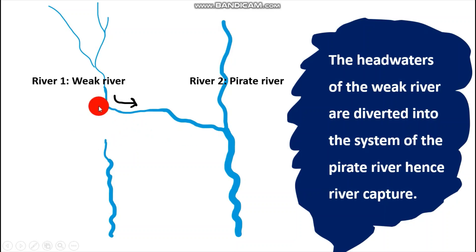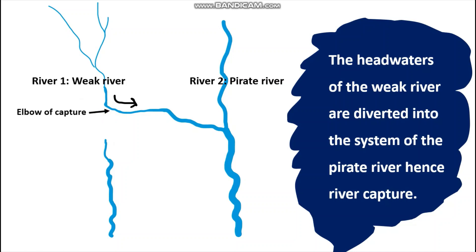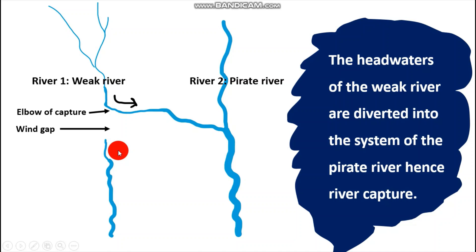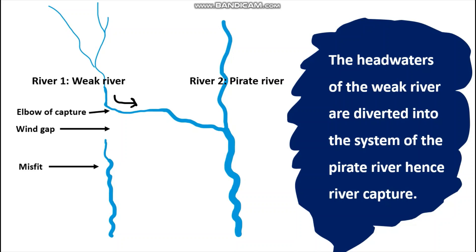Once the headwaters of the weak river get diverted into the system of the stronger river, there forms a gap between the point at which the capturing has taken place. The exact point where river capture has taken place is referred to as the elbow of capture. The dry valley between the captured river and the river flowing downstream is referred to as a wind gap. The section of the weak river left flowing downstream is referred to as a misfit. And that is how river capture takes place.